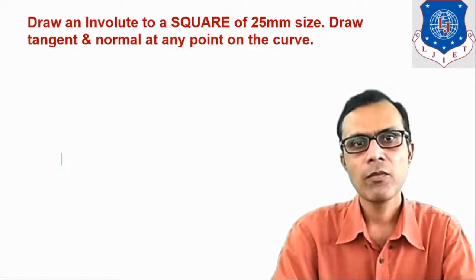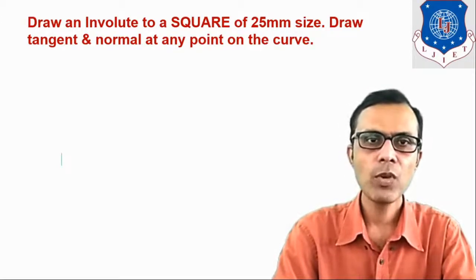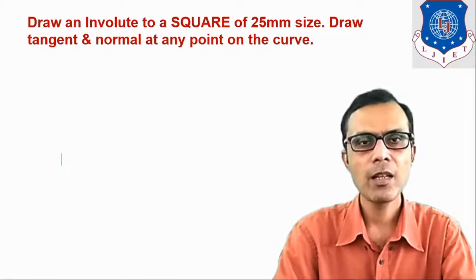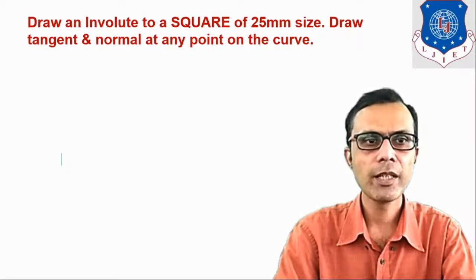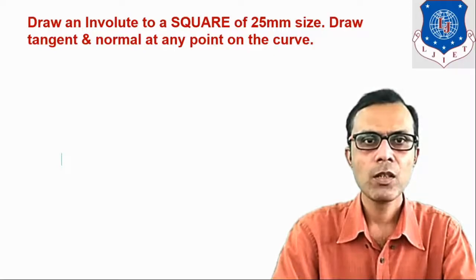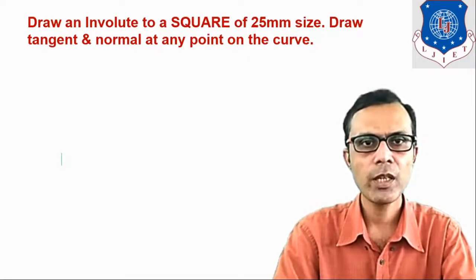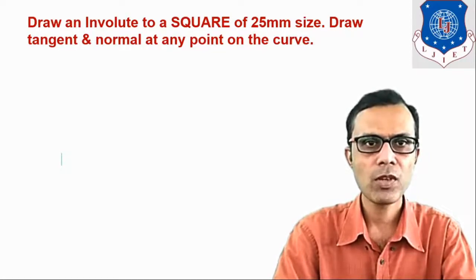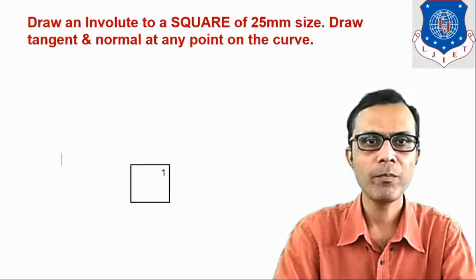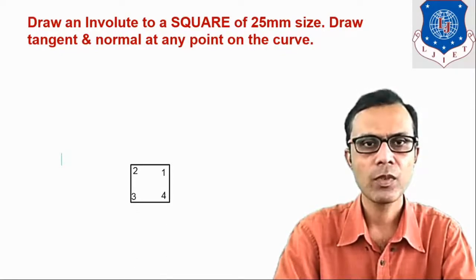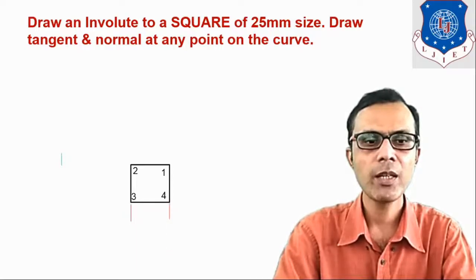Let us start with the polygon. You know polygon means square, triangle, pentagon, hexagon — all these are polygons. Let us see the given data: draw an involute to a square of 25 mm size, and draw tangent and normal at any point on the curve. So the given polygon is square. First of all, we have to draw a square of size 25 mm. Write down the corner points 1, 2, 3, and 4, and write down the dimension of the square as 25 mm.